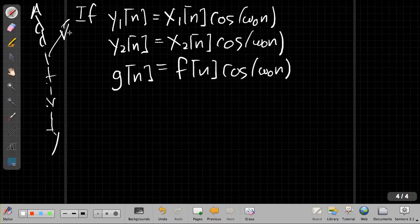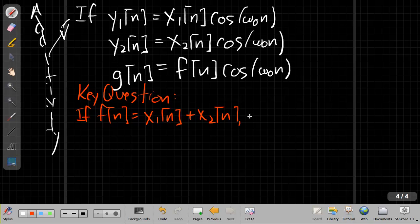So again, our key question here. If this new input f of n is the sum of the other two, so if f of n is x1 of n plus x2 of n, is g of n equal to y1 of n plus y2 of n? To figure out if this is the case, we need to find a way to get both the g and the sum of y1 plus y2 in terms of something common we can compare, which is x of n.